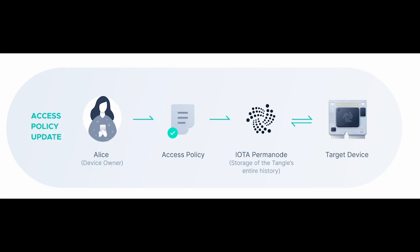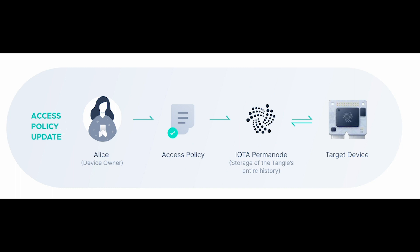With IOTA Access, Alice encodes her access rules into a digital policy, which will be forever registered in the distributed ledger. Every access event also has an immutable registry on the ledger. Every transaction made by customers is also done via the ledger.